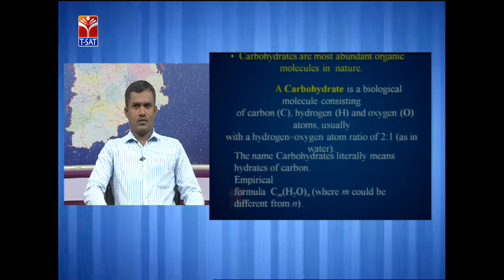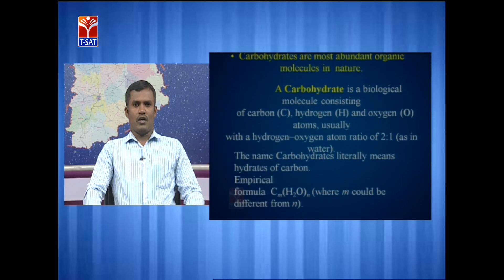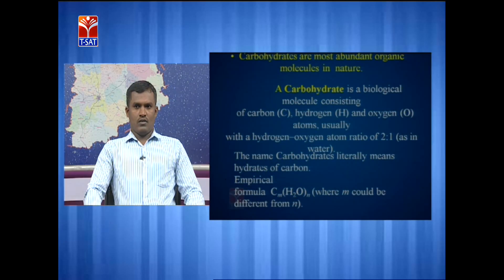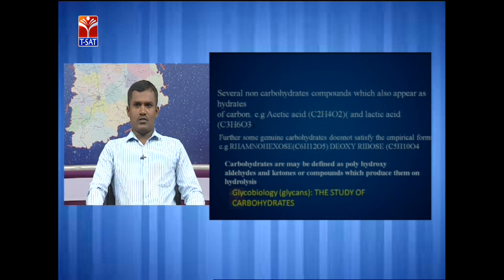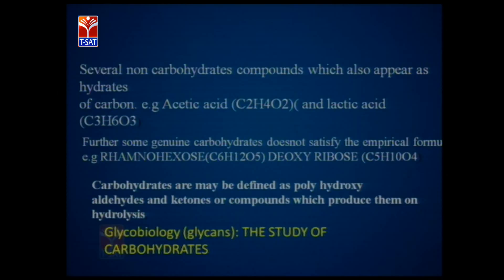So, what are carbohydrates? Carbohydrates are the most abundant organic molecules in nature. A carbohydrate is a biomolecule consisting of carbon, hydrogen, and oxygen in the ratio of 2:1, as it is in water, that is H2O. The name carbohydrate literally means hydrates of carbon. The general formula of carbohydrates is CmH2On, and several carbohydrates do not satisfy this formula. Some genuine carbohydrates also do not satisfy this formula.